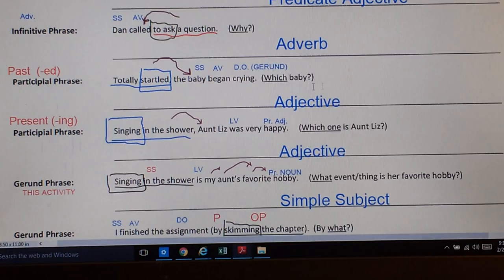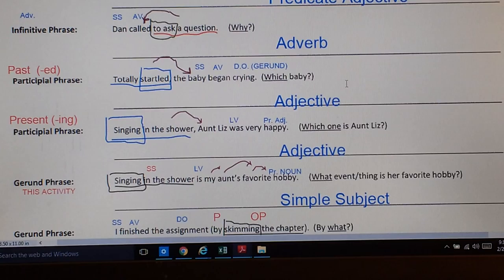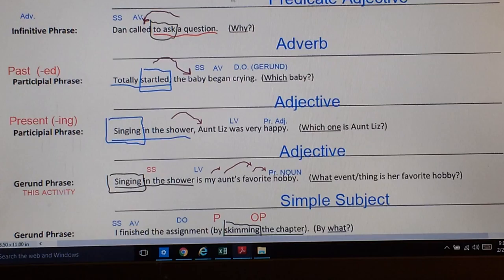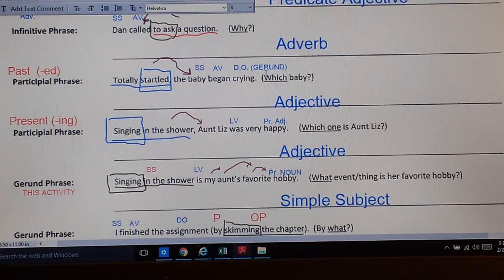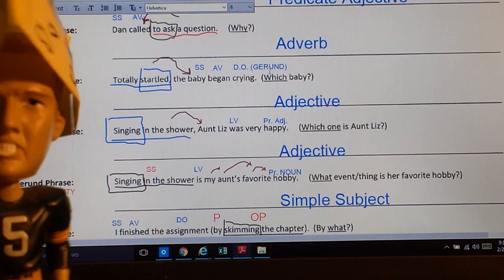So here's one in the past. The past participle. Let's make sure we get this into focus. Totally startled, the baby began crying. Now I might ask the question, which baby? The baby that was somewhat startled? The baby that was totally startled? Which one? Startled is actually our participle. And totally startled, which is underlined as our participial phrase, acting like an adjective, telling which one. Which baby?